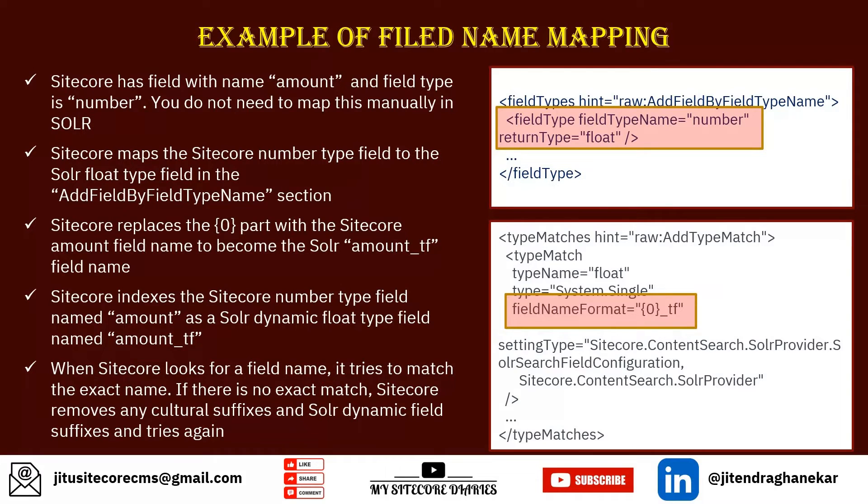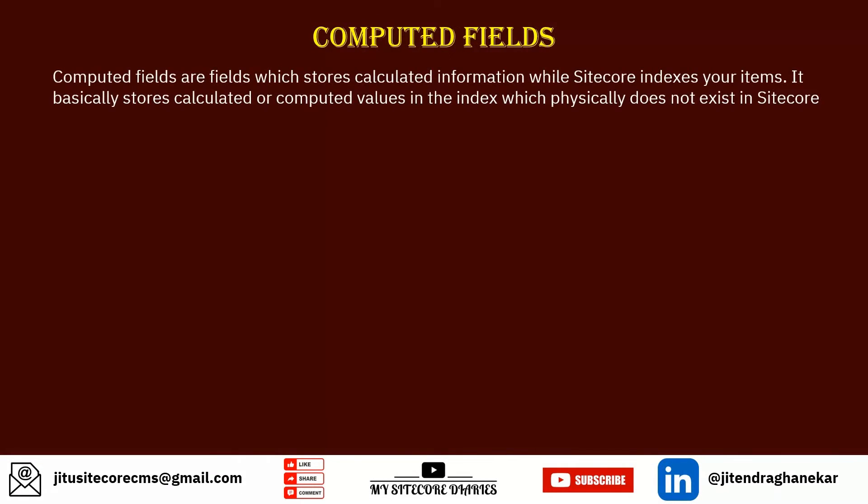Now let's look at computed fields. Computed fields are fields which store calculated information while Sitecore indexes items. Sitecore stores computed or calculated values in the index which do not physically exist as fields in Sitecore. For example, if you have categories and products where the category is a parent folder, there is no explicit field on the product specifying its category.